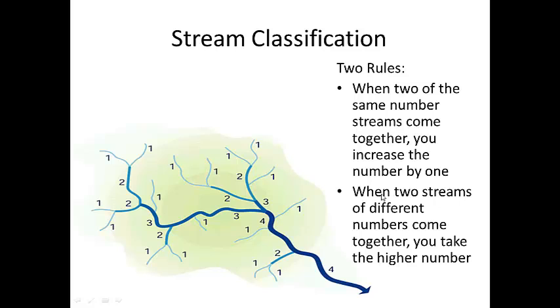The second rule is when two streams of different numbers come together, you just take the higher number. It doesn't increase the stream order. So for instance, when this two and this one come together, the stream just stays a two. When this one flows into this three, it still stays a three. When this two flows into this four, it stays a four. So anytime that you have a lower number stream coming in to a higher number stream, you just take the higher number. So again, two of the same number streams coming together, you increase it. And a lower number coming in to a higher number doesn't change.